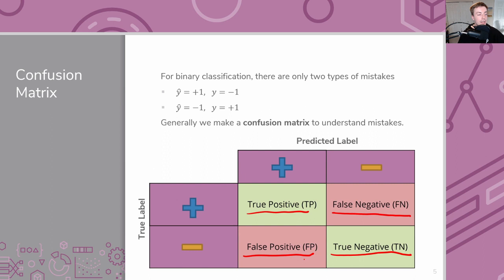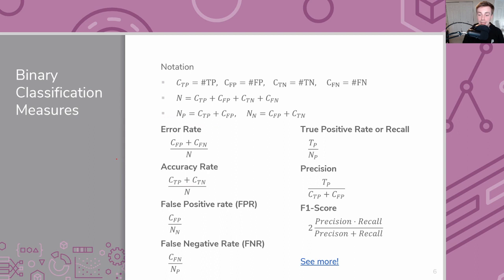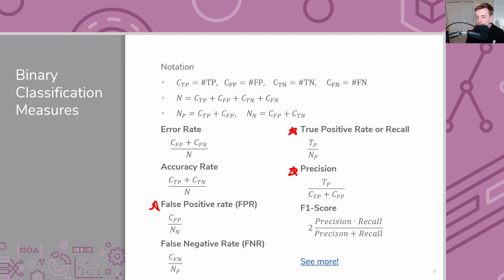We might want to look at these statistics to see whether our model is performing the way we want — maybe making a similar amount of false positives and false negatives, or depending on context, caring more about one type of error versus another. Today we're really going to focus on precision and recall, but I also want to briefly discuss the true positive rate and false positive rate.